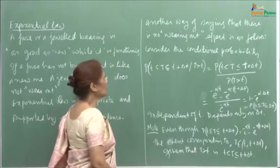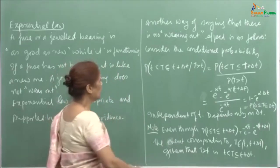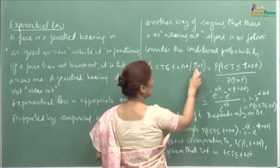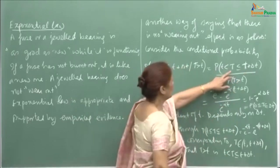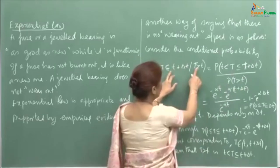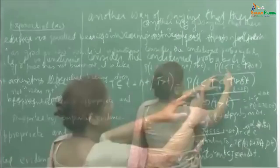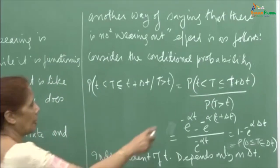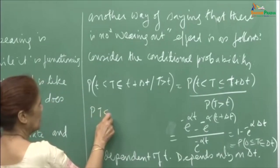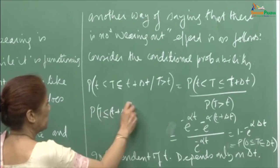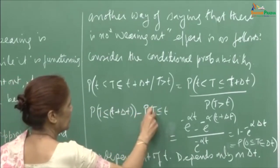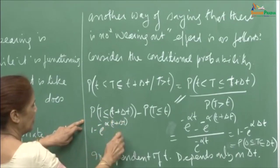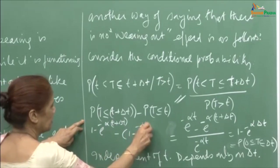Another way of saying there is no wearing-out effect is as follows. Consider the conditional probability that the lifetime T lies between t and t plus delta T, given that T is greater than t. The intersection of these two events is simply this, because here also T is greater than t and less than t plus delta T. So the conditional probability can be written as the probability of the intersection divided by the probability that T is greater than t. This is the probability that t is less than or equal to T, less than or equal to t plus delta T, minus the probability that T is less than or equal to t.